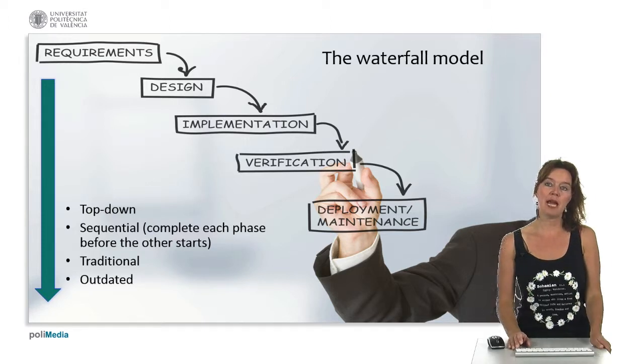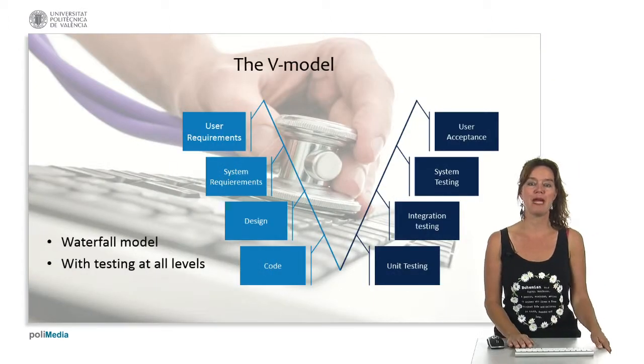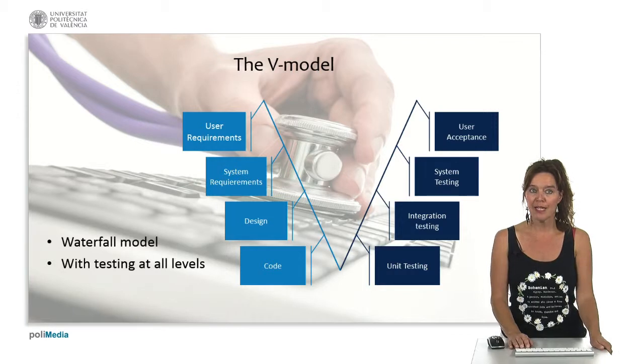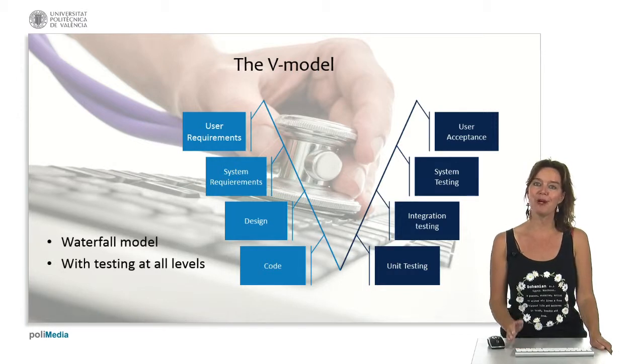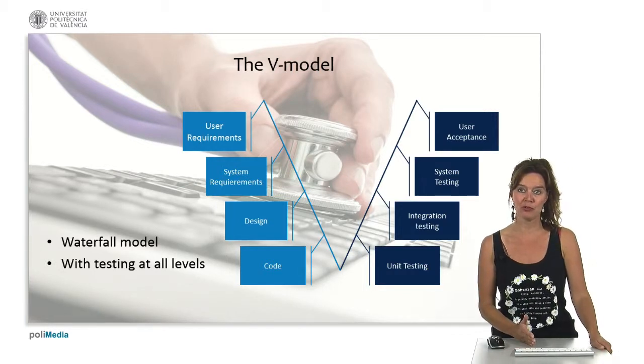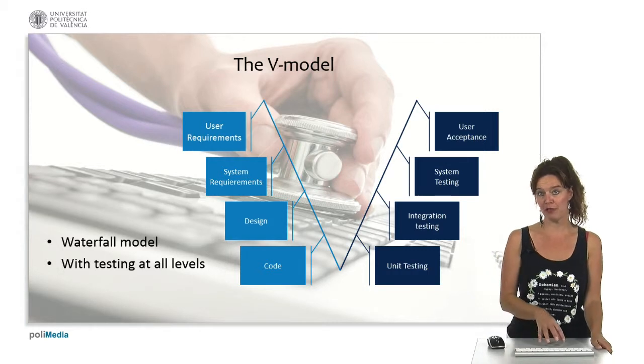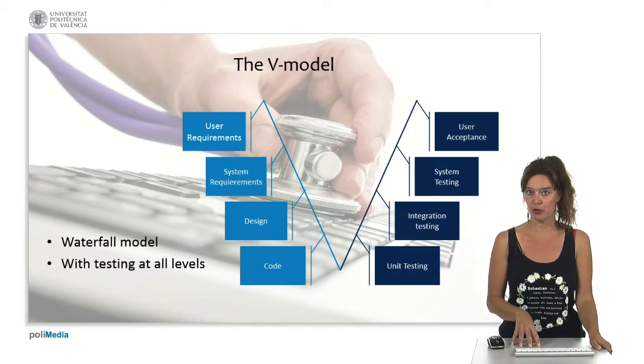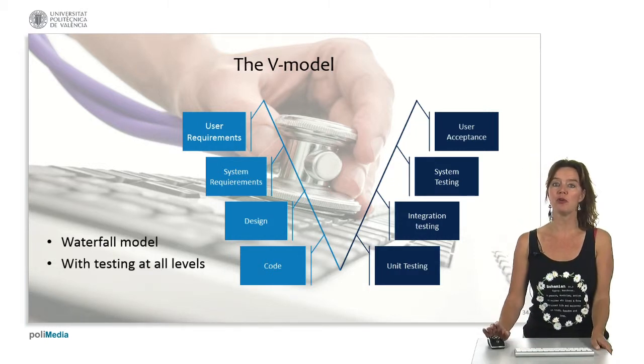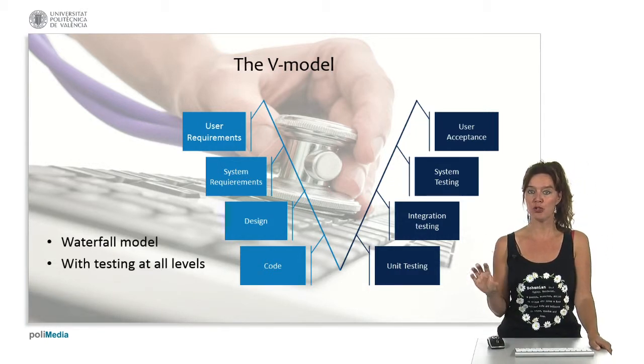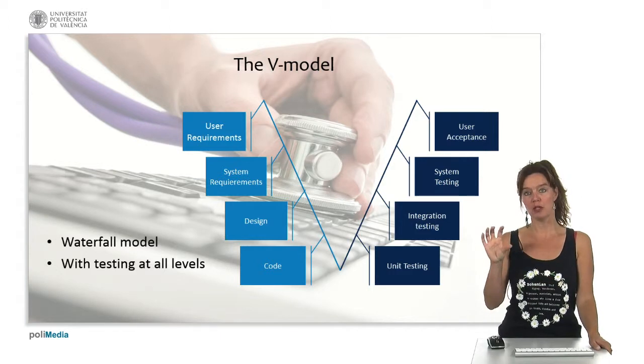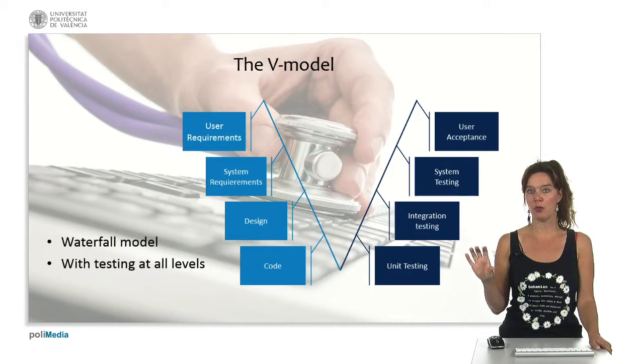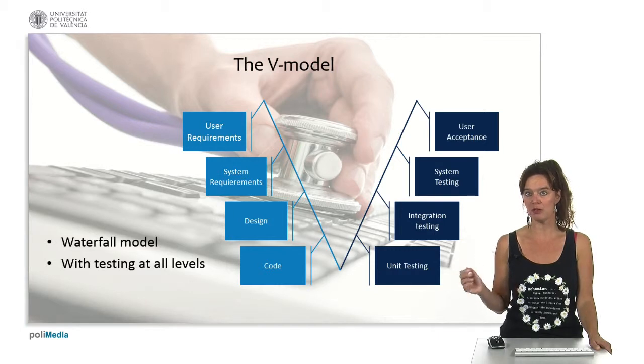The first adaptation to the waterfall model that people have made is called the V model. It is like the waterfall model but it includes testing at all levels. We make sure that everything we make at a certain level has some quality and it is being assured. At the code level we do unit testing.